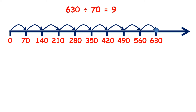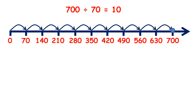630 divided by 70 is 9. 700 divided by 70 is 10.